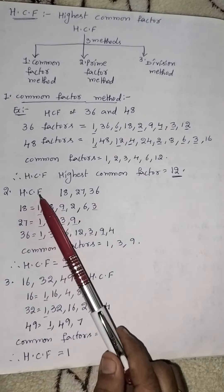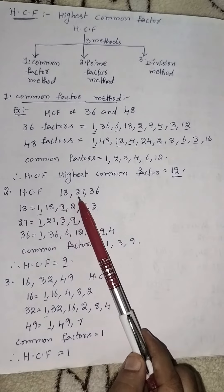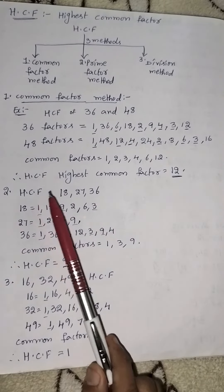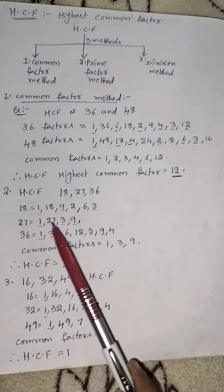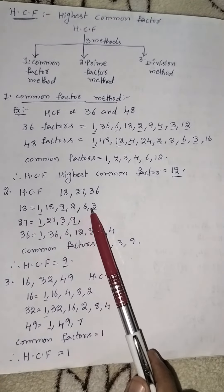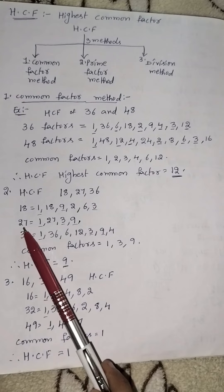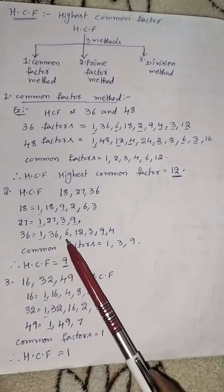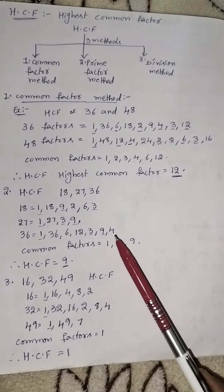Second example: find the HCF of 18, 27, 36. First we write the factors. 18 factors: 1, 18, 9, 2, 6, 3. 27 factors: 1, 27, 3, 9. 36 factors: 1, 36, 6, 12, 3, 9, 4.